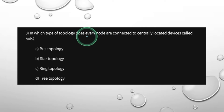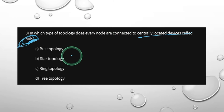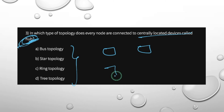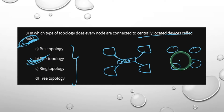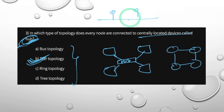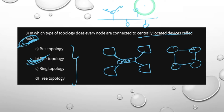In which type of topology is every node connected to a centrally located device called a hub? It is a type of network in which every device is connected to a central hub — this is star topology.